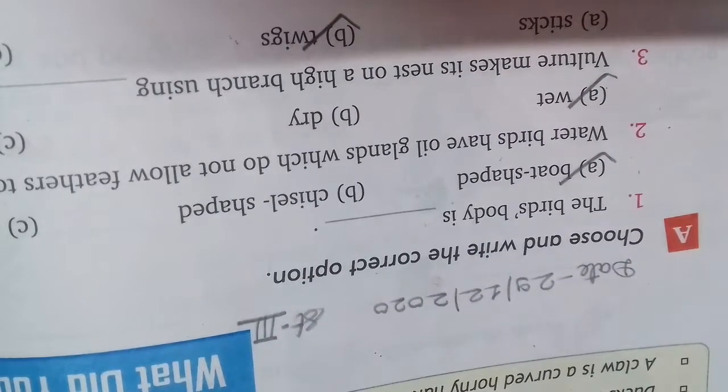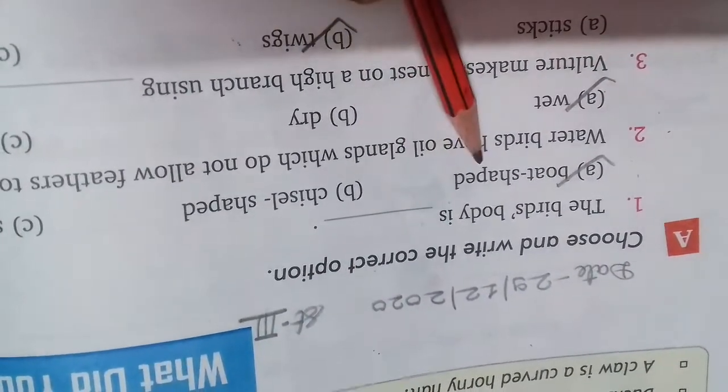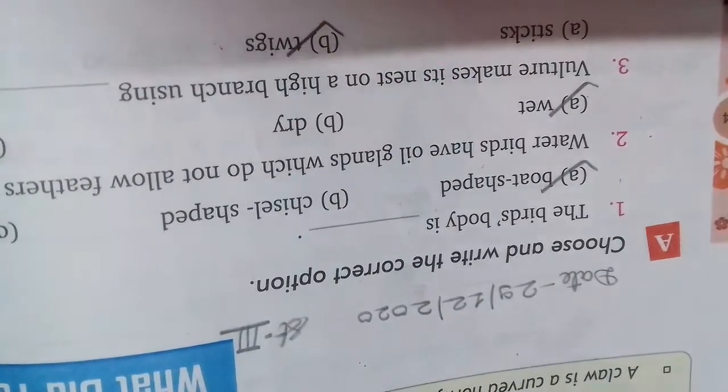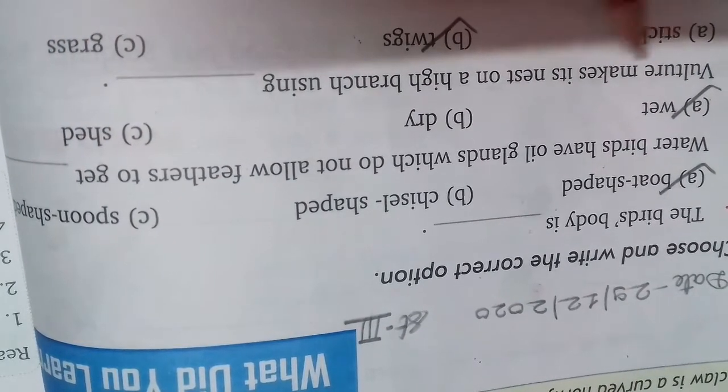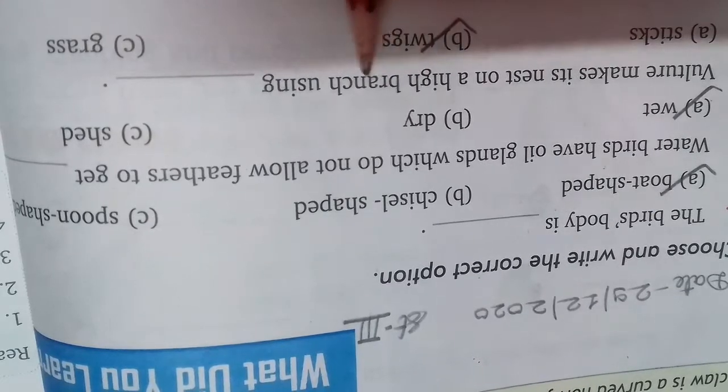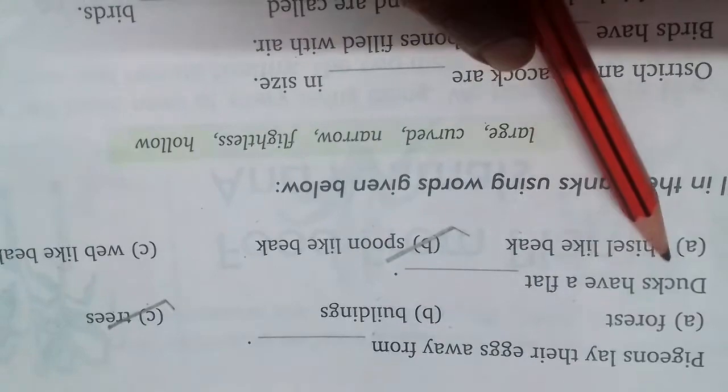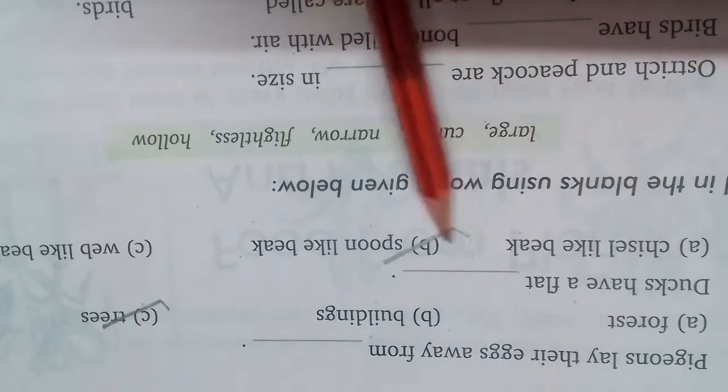I again recall all the choose correct one from first: the bird's body is boat shaped, second water birds have oil glands which do not allow feather to get wet, third vulture make its nest on a high branch using twigs, fourth pigeon lay their eggs away from trees, fifth ducks have a flat spoon like beak.